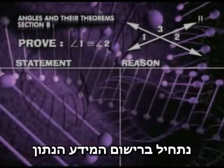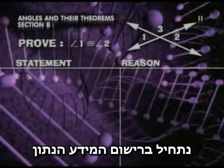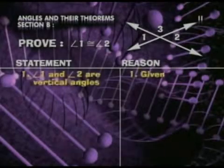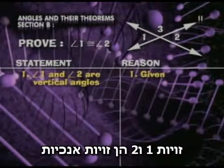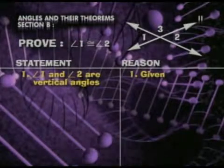We'll begin by stating our given information: angle 1 and angle 2 are vertical angles. No big whoop.